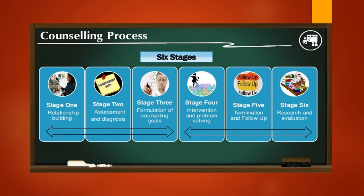The counseling process basically involves 6 stages: Stage 1 is relationship building, Stage 2 is assessment and diagnosis, Stage 3 is formulation of counseling goals, Stage 4 is intervention and problem solving, Stage 5 is termination and follow-up, and Stage 6 is research and evaluation.